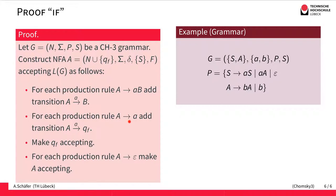For productions where we replace a non-terminal A by exactly one terminal a, the idea is that we are in state A and the derivation must end, since all non-terminals are replaced. So the automaton should be accepting. We realize this by adding a transition from state A to the new fresh final state QF, consuming the lowercase a in the process. QF is made an accepting state.